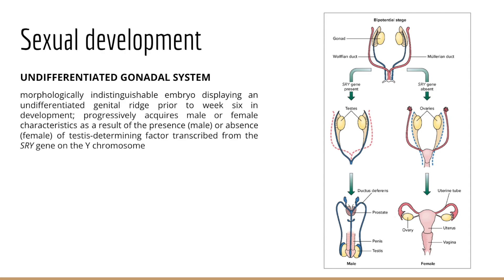As we consider sexual development, we're going to look at the undifferentiated gonadal system. Six weeks elapse in humans after fertilization before the first signs of sex differentiation are noticed. All humans possess an undifferentiated gonadal system before this time, including both male and female reproductive ducts. About six weeks after fertilization, a series of events unfold whereby the sexually indifferent gonads and genitalia progressively acquire male or female characteristics. A gene on the Y chromosome becomes active — the SRY gene — which causes neutral gonads to develop into testes, which begin to secrete two hormones: testosterone and Mullerian inhibiting substance.